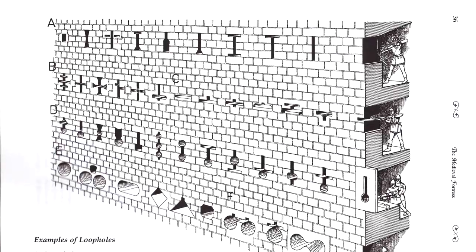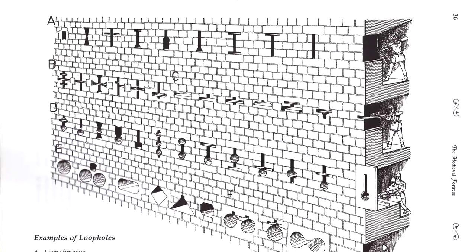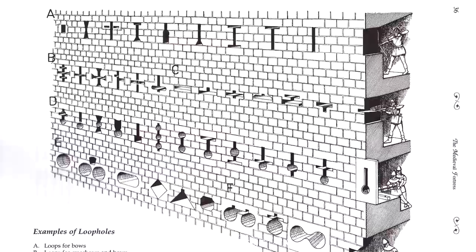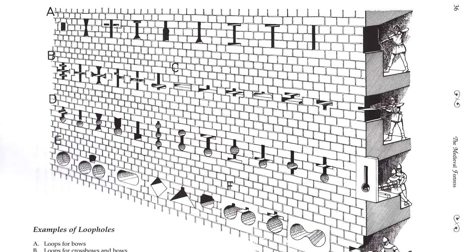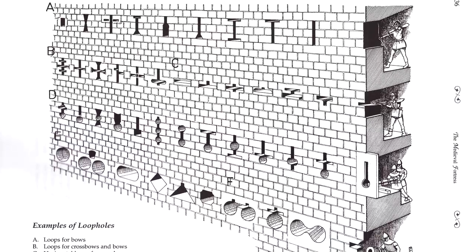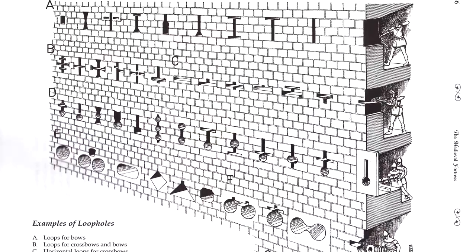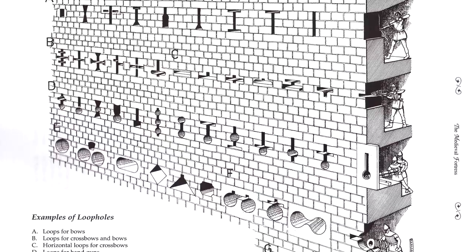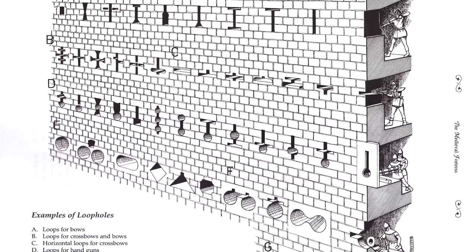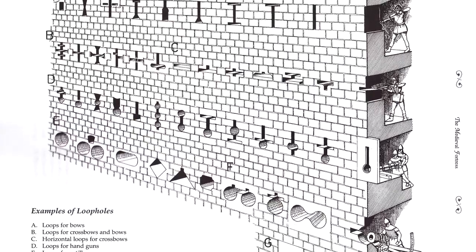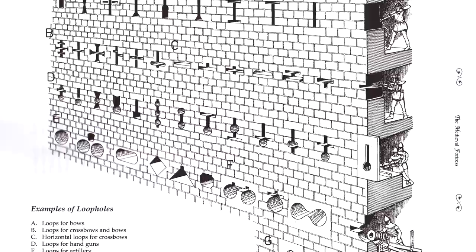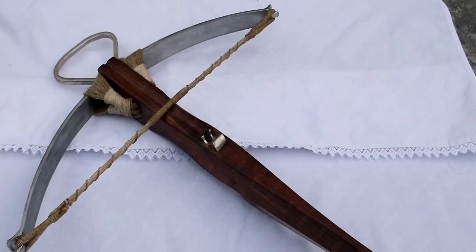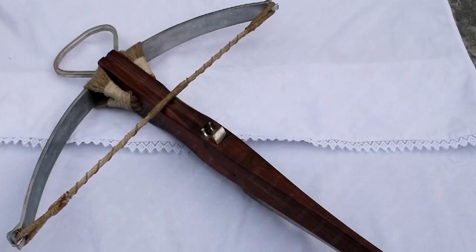Hello everyone and welcome back to Cobian History. Today we will be talking about arrow loops, or arrow slits, for my Anatomy of Castle series. Arrow loops are also known as arrow slits, loophole, archy, and sometimes balustraria, although balustraria usually refers to it being used by a crossbow.